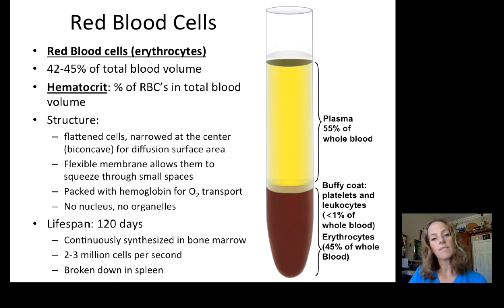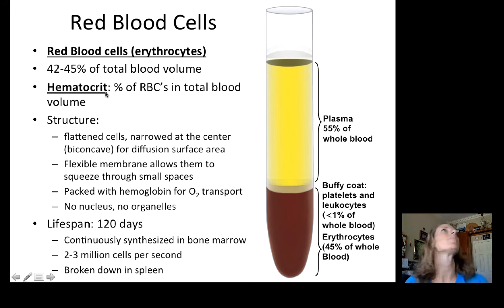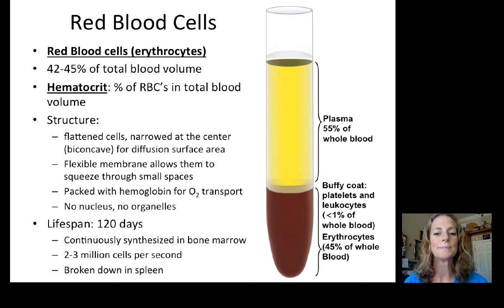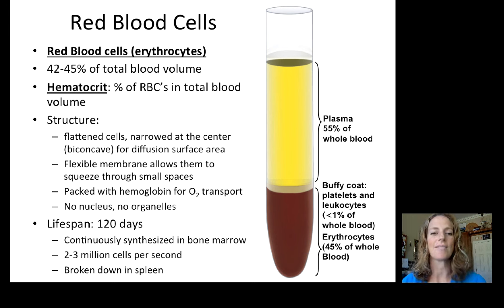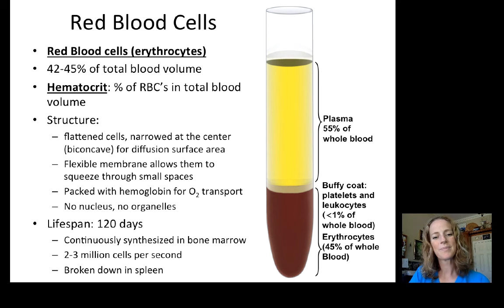Red blood cells are about 42 to 45% of total blood volume. The measurement of the percent red blood cells in total volume is called hematocrit. Increasing red blood cells increases blood viscosity and thereby increases resistance of the blood flowing through the tissues — so the total percentage of red blood cells can actually affect vascular resistance.